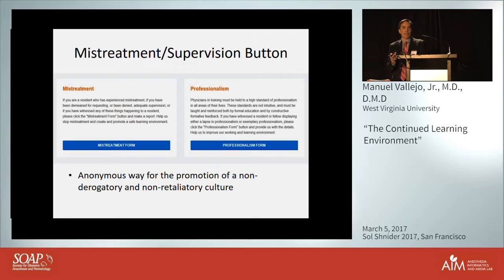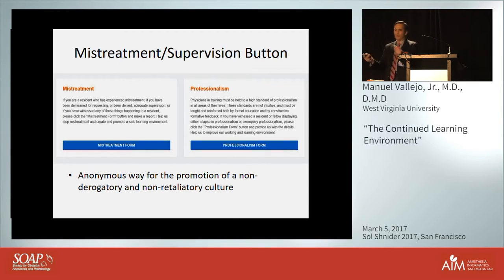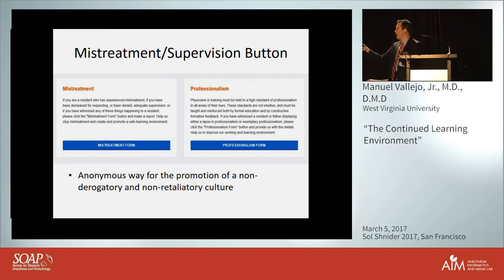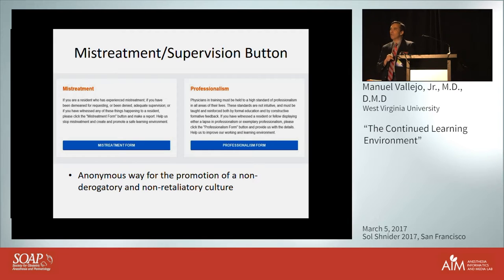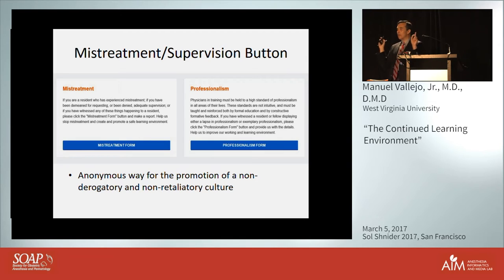We also have an exemplary professionalism button. If a resident is doing something really well — say there was a bus crash and a resident handled everything, or a resident got a patient something to drink or talked to the family — that can be reported too. At our institution it runs about 75-25%, with 25% being exemplary reports. These get forwarded to administration so that in medical executive committee meetings they can see both exemplary and unprofessional behavior. That's something you can consider at your institution.